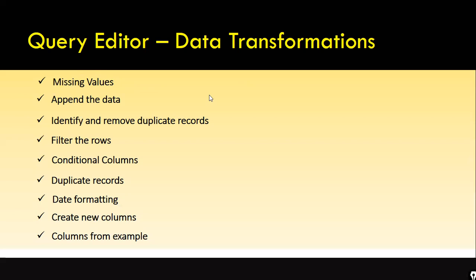In data science, we do data imputation — replacing missing values with some meaningful data using condition-based mean or similar techniques. But in data analytics, if we have missing values in important columns, we go back to the customer. There are cases where they will say: replace missing values with 999 or some default value, so that later they can identify how many records were having missing values.